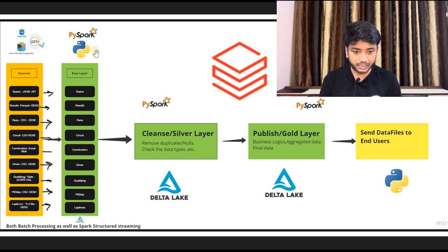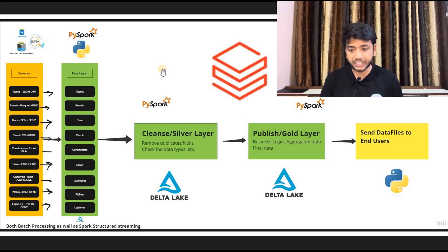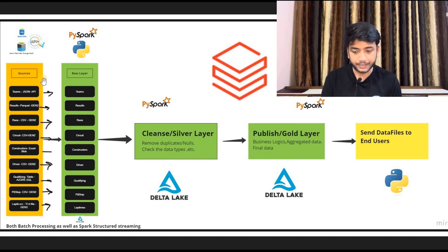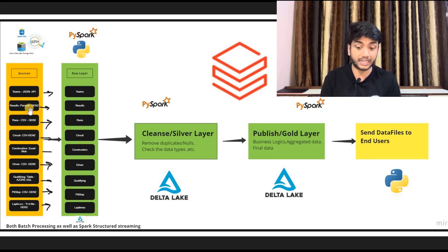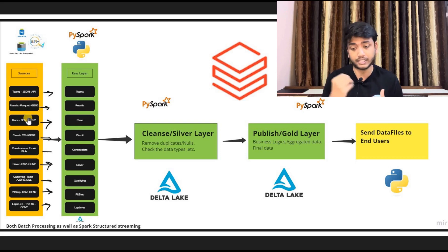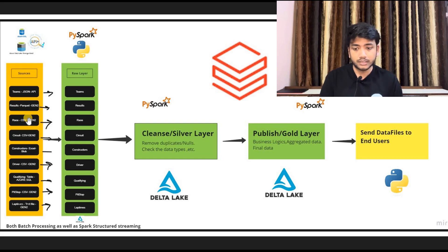Let's get started. Here I am sharing my screen — you can see this is the architecture of my project. We are getting data from Azure Data Lake Gen2, Azure SQL APIs, and blob storage. We have multiple sources and multiple types of files: JSON, Parquet, CSV, SQL tables, API data, and TXT files from the Gen2 storage account.